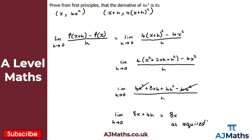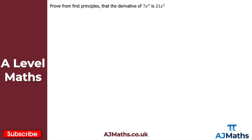Now for the final question — if you're feeling confident, have a go yourself. We want to prove from first principles that the derivative of 7x³ is 21x². The coordinates are (x, 7x³) and (x+h, 7(x+h)³).